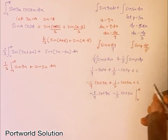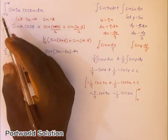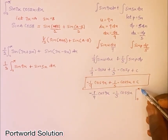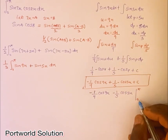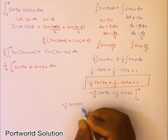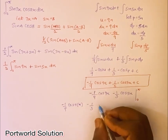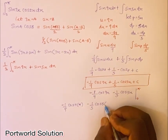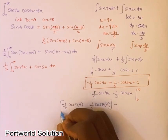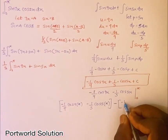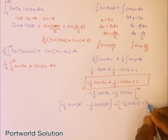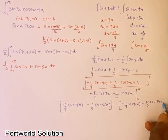Now applying the limits from 0 to π: I evaluate −(1/9)cos(9π) − (1/5)cos(5π) for the upper limit, then subtract the lower limit value: −(1/9)cos(9·0) − (1/5)cos(5·0), which gives −(1/9)cos(0) − (1/5)cos(0).